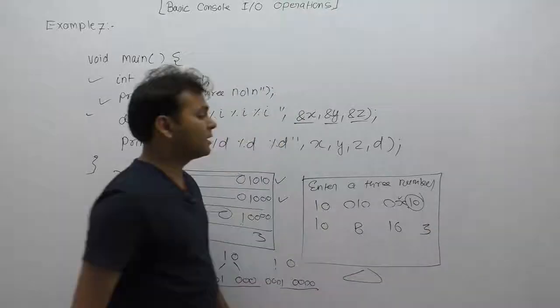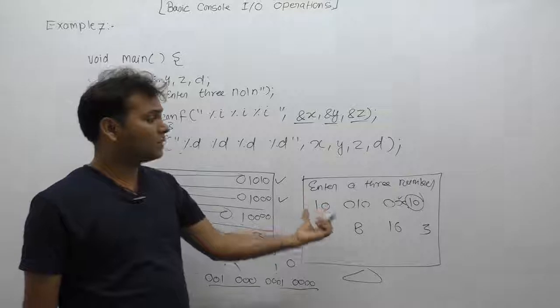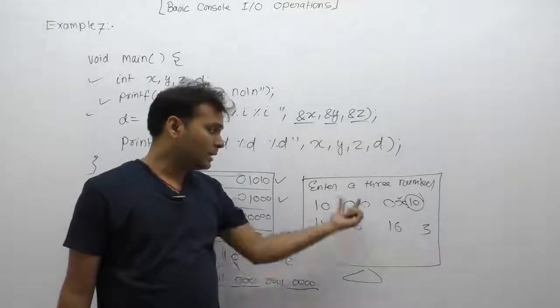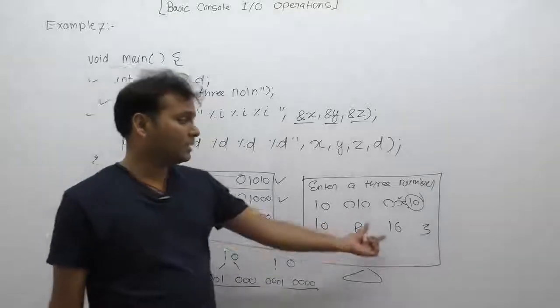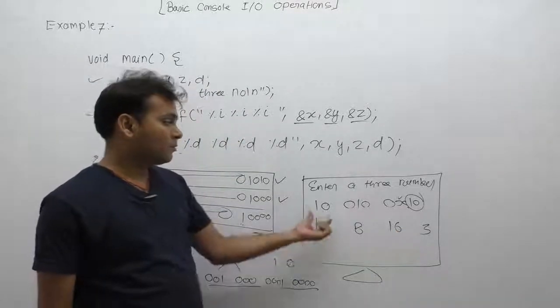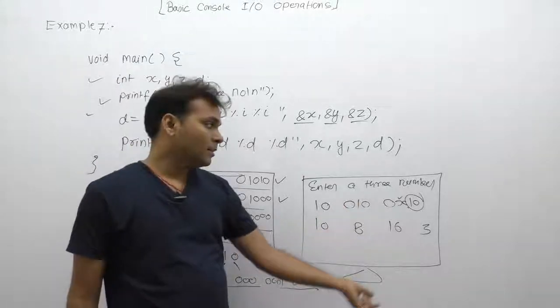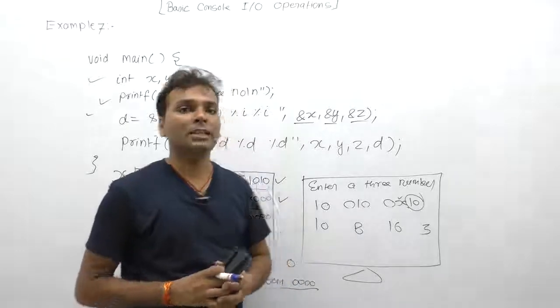This is the result of in that case. 10, 10, 10, 10 and 0, 10, 10 and 0, and 3. Octal ke case mein, the result also 8, 8, 0, and 3 like that. This is the different flavors of format specifiers.